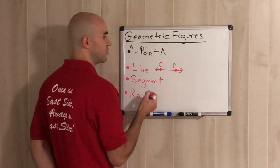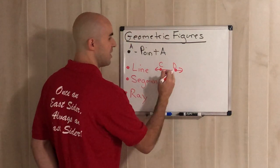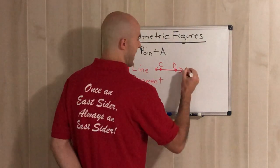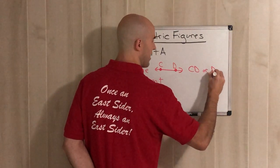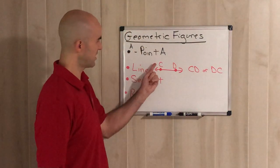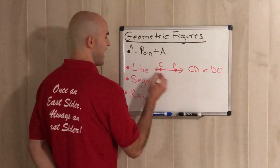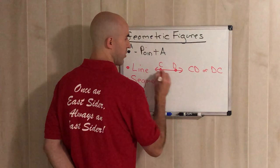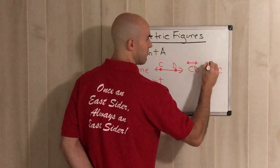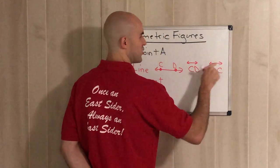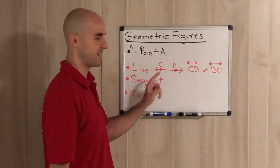The points on a line are used to label it. When you see that, you would call it line CD or line DC — the order doesn't matter. Instead of writing the word 'line' every time, you can draw a small line with two arrows on top of the letters. That's the notation for a line. It's called line CD or line DC; the order doesn't matter.